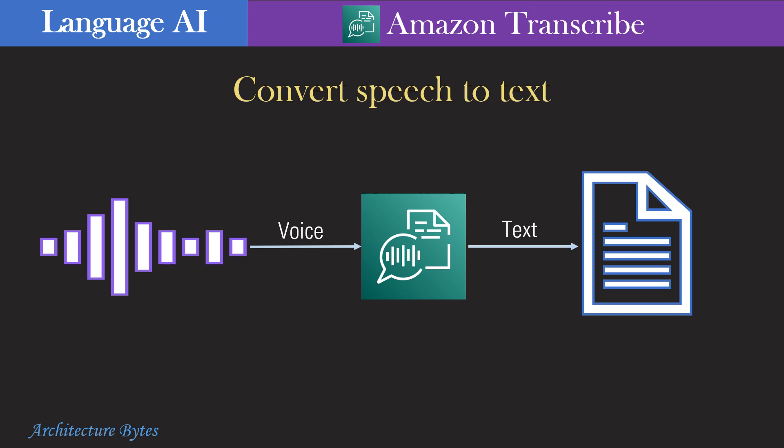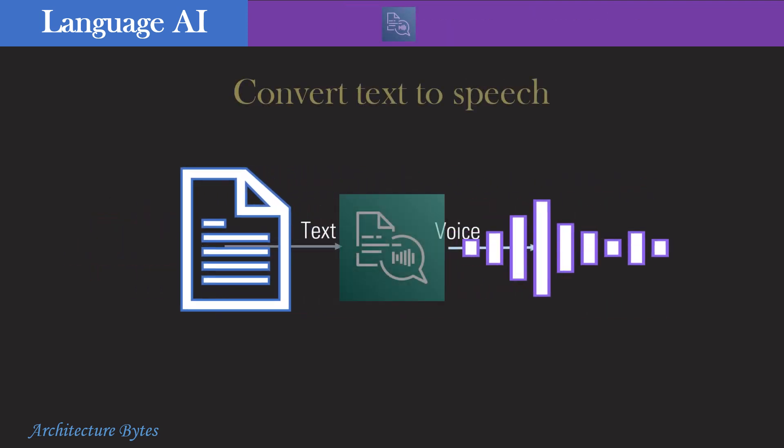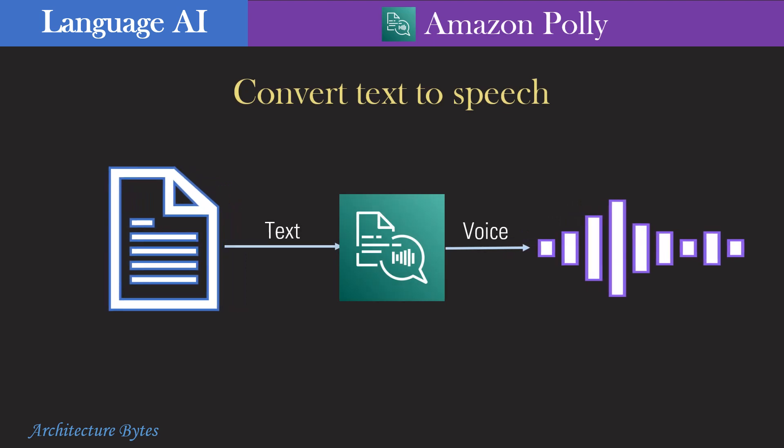Amazon Transcribe call analytics can extract conversation insights like call sentiment and speech loudness. With Amazon Polly, you convert text to speech in natural sounding human voices in many languages. You can customize speech output in a variety of ways. It supports speech synthesis markup language, or SSML, tags. Amazon Polly uses deep learning technologies underneath to deliver human-like speech.